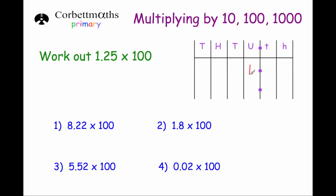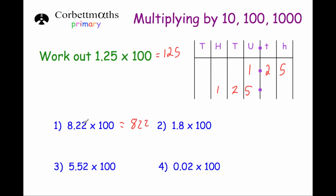Now we're going to look at what happens when we multiply decimal numbers by 100. Take 1.25 multiplied by 100 — each digit gets 100 times bigger, moving two columns to the left. The 1 moves to become 100, the 2 tenths move to the 20s column, and the 5 hundredths become 5 units. The answer is 125. Similarly, 8.22 times 100: just move each digit two columns to the left — the 8 units go to hundreds, the 2 tenths go to tens, and the 2 hundredths go to units — giving 822.